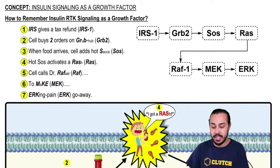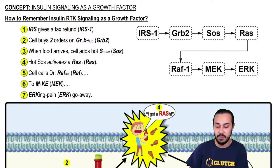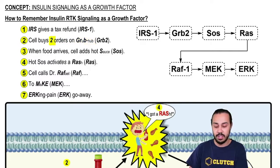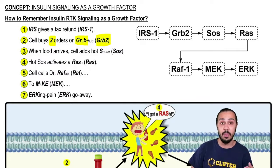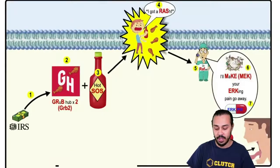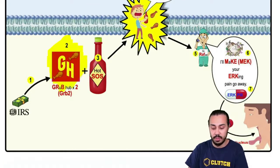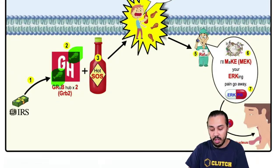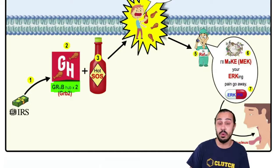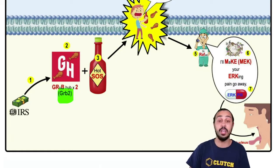That leads us to step 2: the cell decides to use that tax refund money to buy two orders of wings on Grubhub. The two orders on Grubhub represents GRB2 — the adapter protein that binds to IRS1. In the image, we've got the Grubhub symbol with two orders of chicken wings, so Grubhub times two represents GRB2.